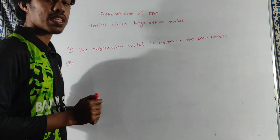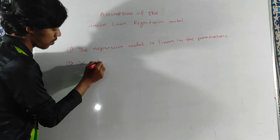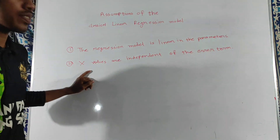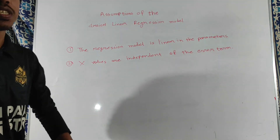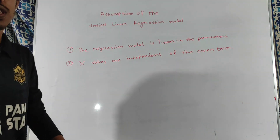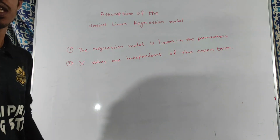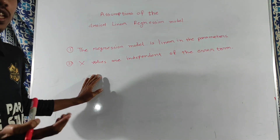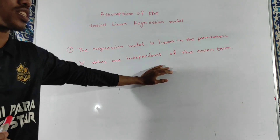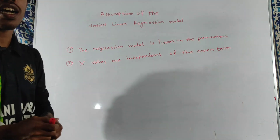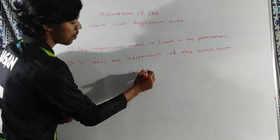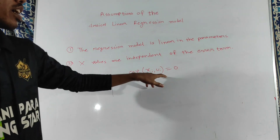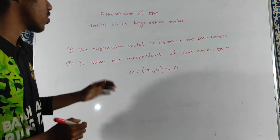The second assumption is that our independent variable X, also called the regressor, and the error term, also called the stochastic term, have no correlation between them. That means the covariance of Xi and the error term equals zero.